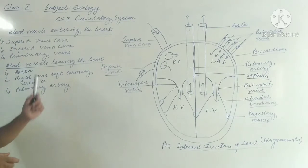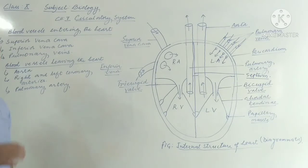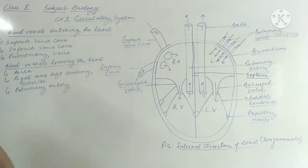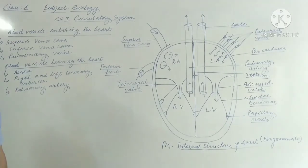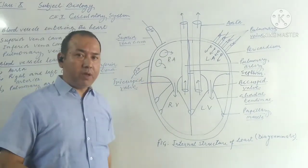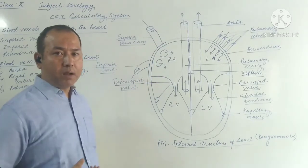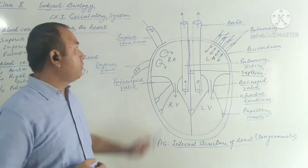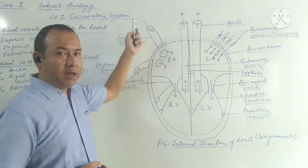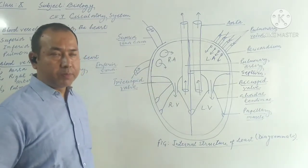There are mainly three blood vessels which carry blood and drain into the heart. The first one is the Superior Vena Cava. As you can see in the figure, it carries all the impure or deoxygenated blood from the head region — that is, the anterior part of the body — and drains it into the right atrium.